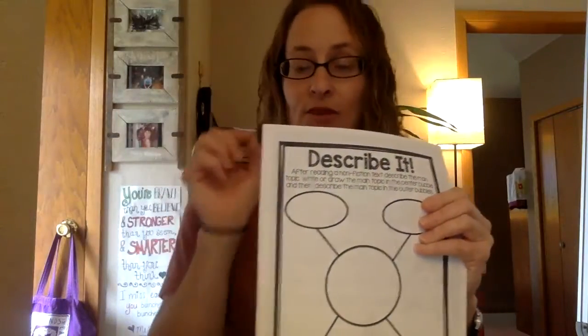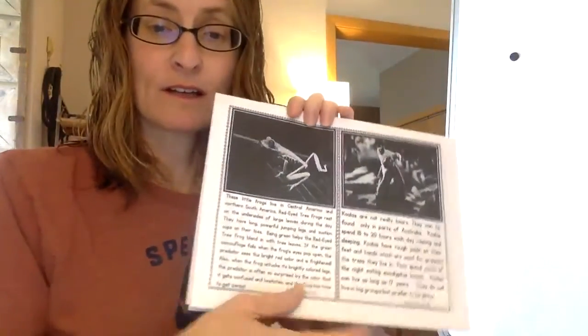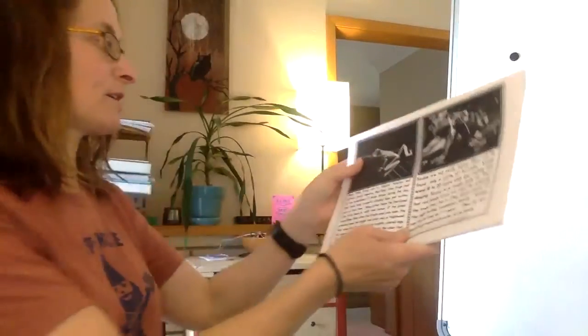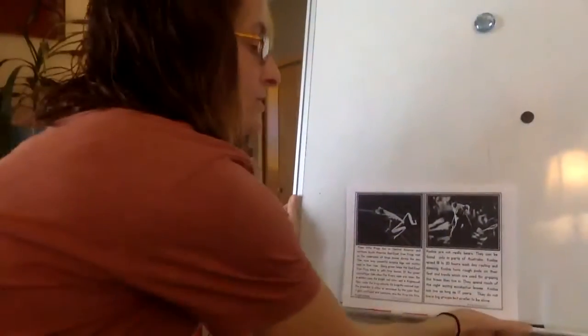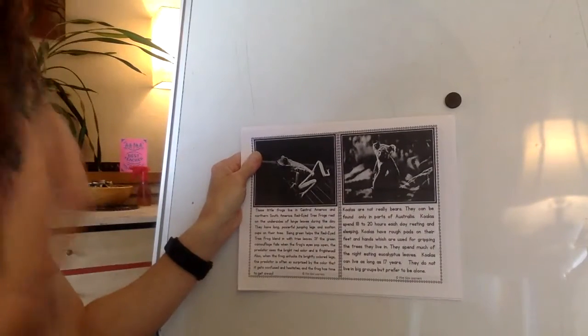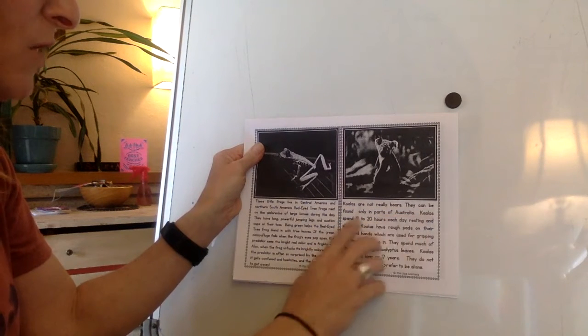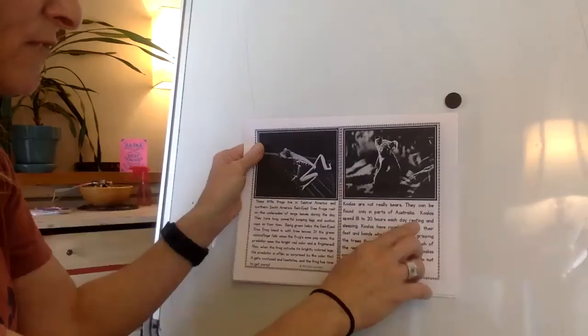You might need to go back to the text and highlight some of those descriptions. I'm going to use the koala as an example — I'd prefer you not do this one since I'm showing you how. Here's the text I'm reading from. Let me pull it a little closer so it's easier to see. So thinking about how the author uses description: koalas are not really bears, they can be found only in parts of Australia, koalas spend 18 to 20 hours each day resting and sleeping.